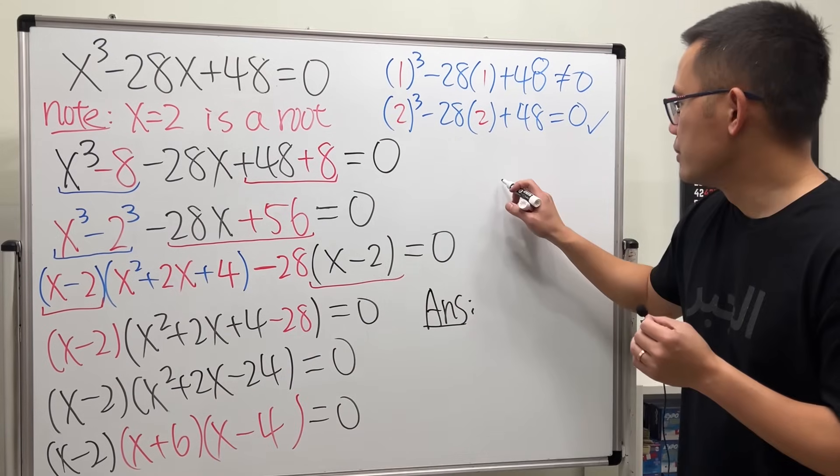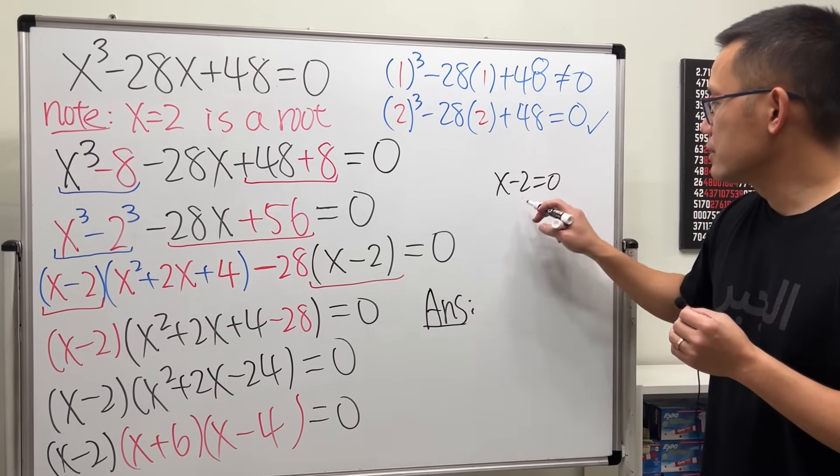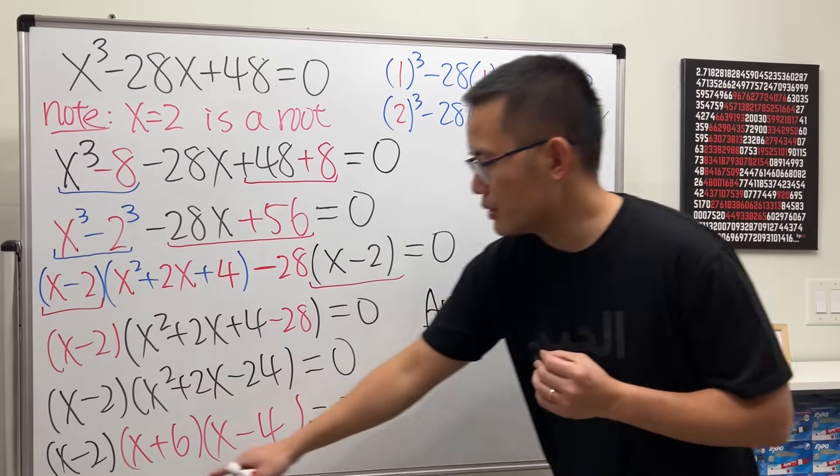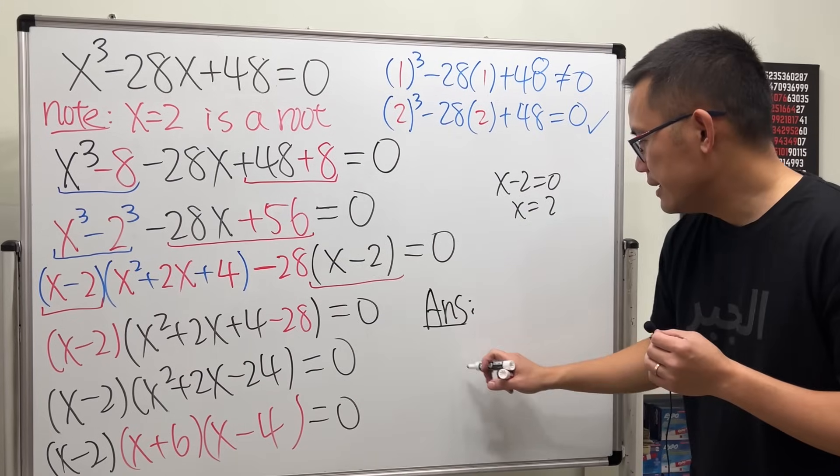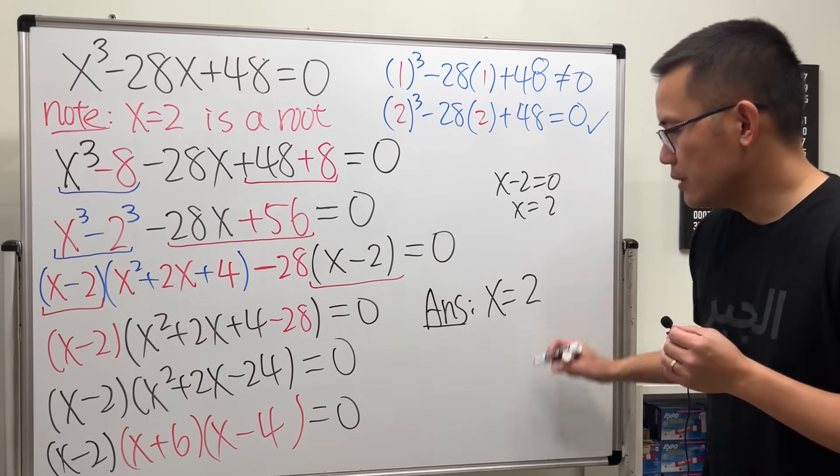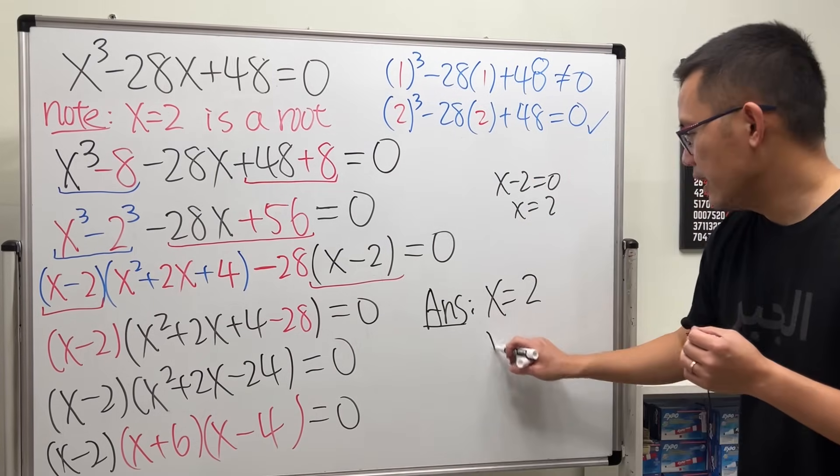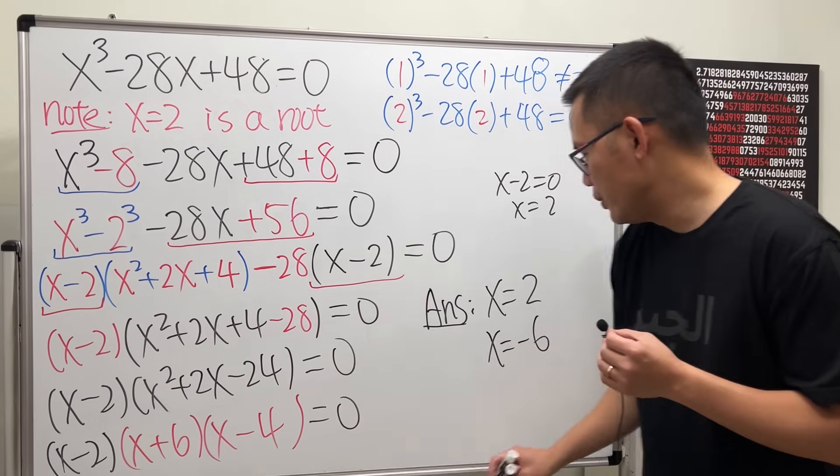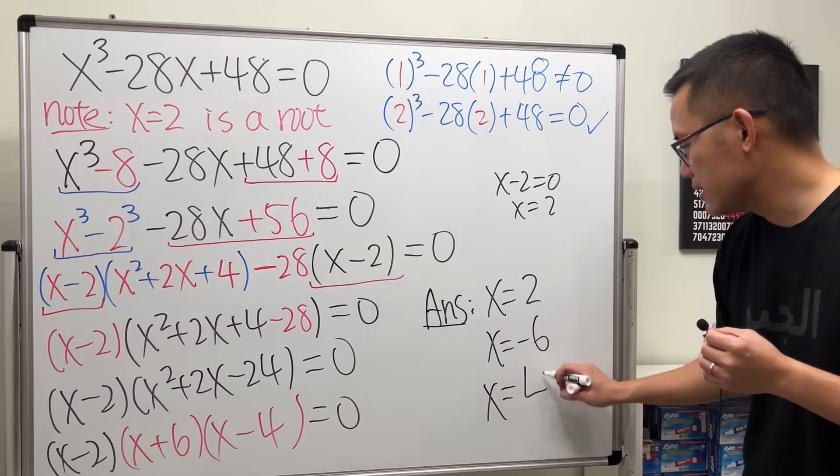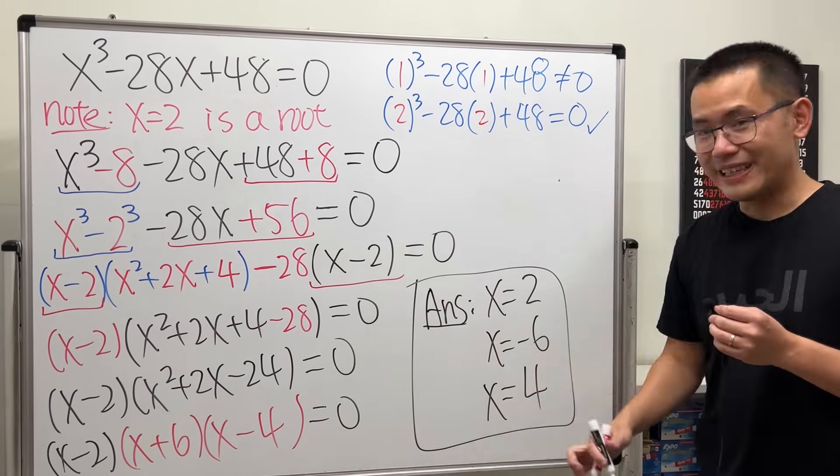Put (x minus 2) equal to zero, so x is equal to 2. Or you can just change the sign, so answers are x equals 2. From here you will get x equals negative 6, and lastly you will get x equals positive 4. And ladies and gentlemen, that's it.